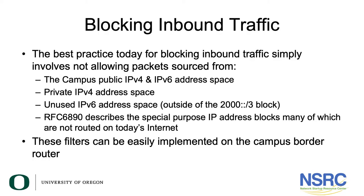For campus networks, best practices for blocking inbound traffic include not allowing packets sourced from the campus's own public IPv4 and IPv6 address spaces, ensuring no packets are sourced from private IPv4 address space, and blocking unused IPv6 address space outside of the 2000::/3 block. Note that RFC 6890 describes special purpose IP address blocks, many of which are not routed on today's internet. These filters can be easily implemented on the campus border router.